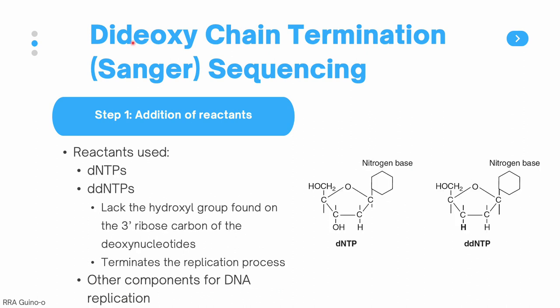Other reactants used are the dNTPs — deoxyribonucleoside triphosphates — which are the building blocks of our DNA during amplification. We have four dNTPs, one each for adenine, guanine, cytosine, and thymine.